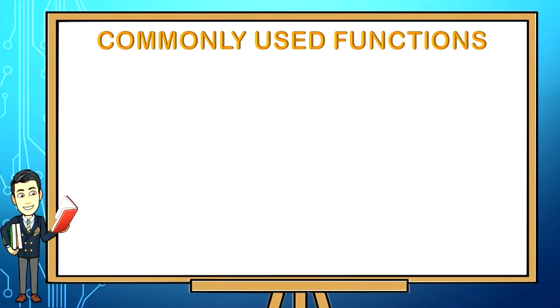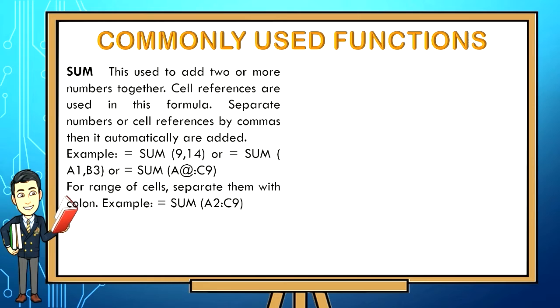Below are some examples of the commonly used functions. SUM, this is used to add two or more numbers together. Cell references are used in this formula. Separate numbers or cell references by commas then it automatically are added. Example: =SUM(9,14) or =SUM(A1,B3) or =SUM(A@C9). For range of cells, separate them with colon. Example: =SUM(A2:C9).